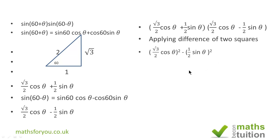And when you square √3, you get 3. So we end up with 1/4(3cos²θ - sin²θ).